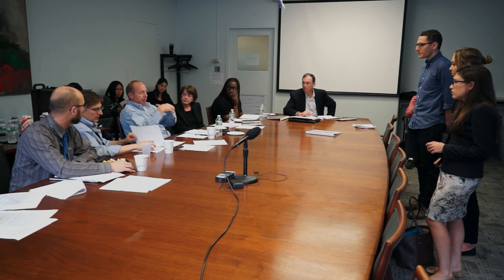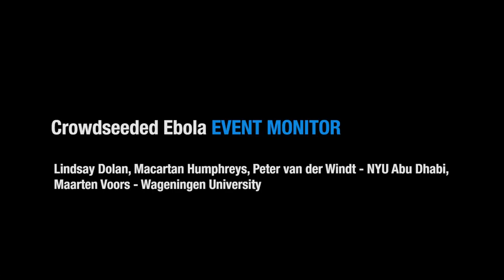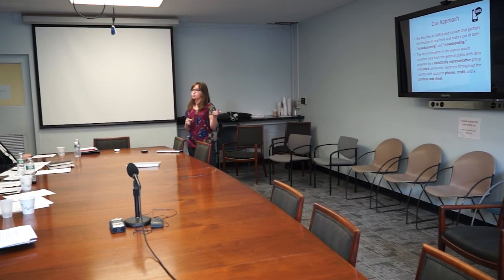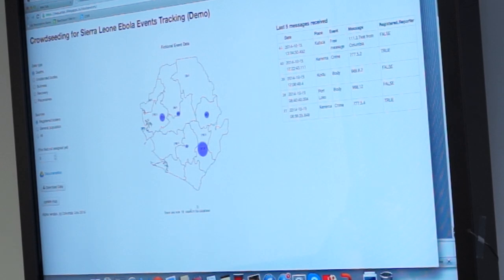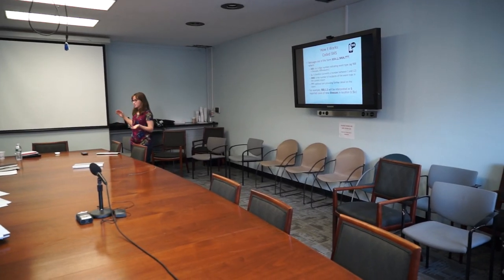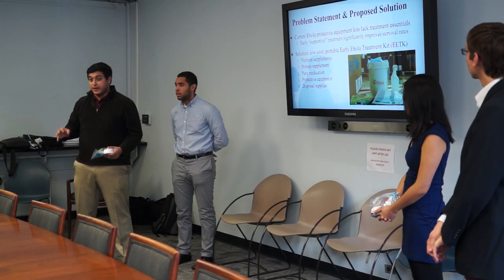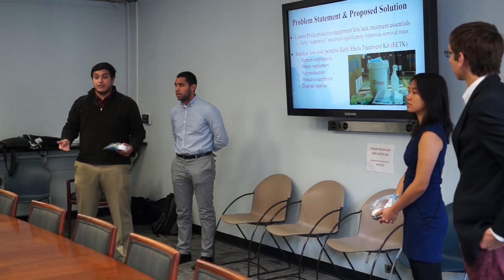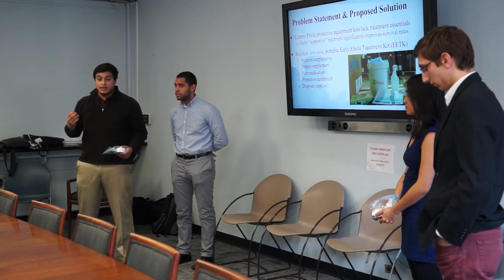What you really need is something you can wrap a body in quickly and safely. We're describing an SMS-based system that collects information in real-time, making use of both crowdsourcing data and crowd-seeding data. This is a very easily scrapable and consistent coding system so we can have a system updating in real-time. Early supportive treatment can significantly improve survival rates, especially in rural settings, but the kits being sent out right now don't have basic pain medication, electrolytes, and so on.